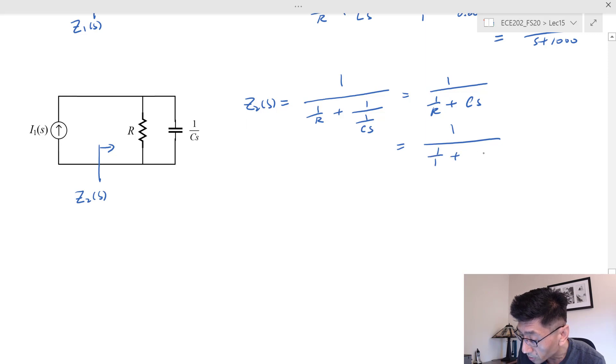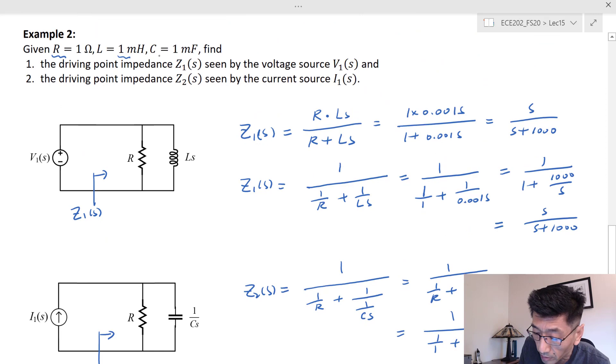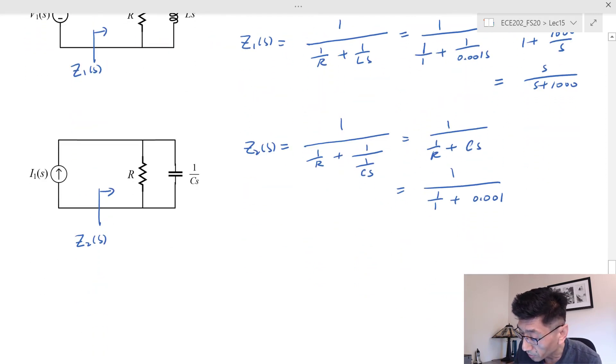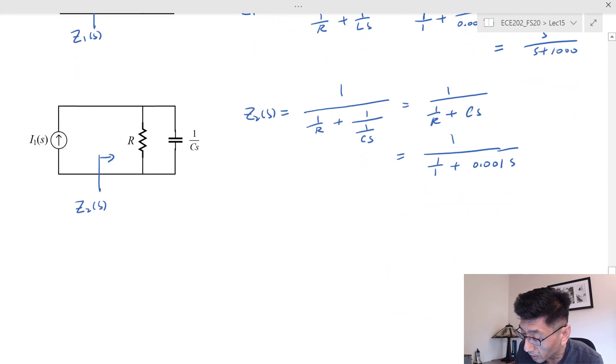I put the numbers in: 1 over 1 plus 0.001s. I think I gave the number one millifarad here, so I put 0.001s. In this case, I multiply a thousand on the numerator and denominator, and I get one thousand over s plus one thousand.